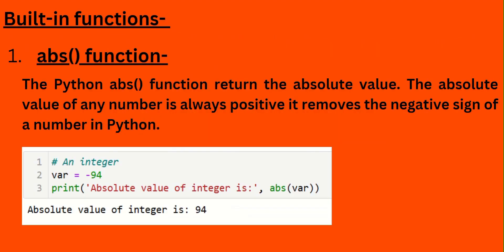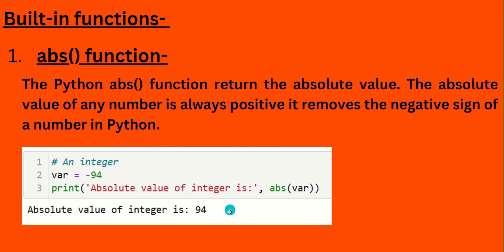There are many built-in functions. The first one is the absolute function, represented by the keyword 'abs' in lowercase. The abs function returns the absolute value — that means when you pass a negative number it returns the positive number. For example, a variable value of -94 returns +94, and -94.39 would return +94.39.